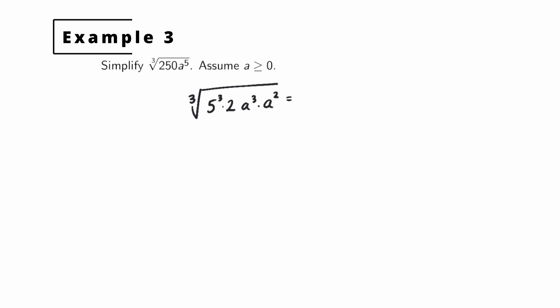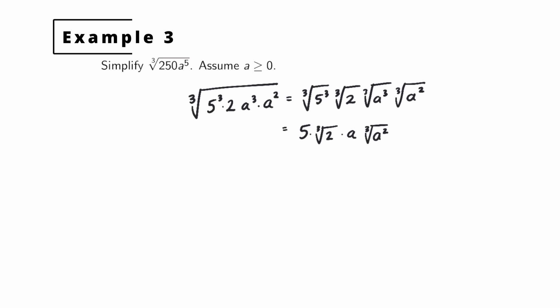Using the multiplication property, we break up all the factors: the cube root of 5 cubed, the cube root of 2, the cube root of a cubed, and the cube root of a squared. Using the cancellation property, the cube root of 5 cubed is 5. The cube root of 2 stays since 2 is not a perfect cube. The cube root of a cubed gives just a. And a squared is not a perfect cube, so we leave it as the cube root of a squared.